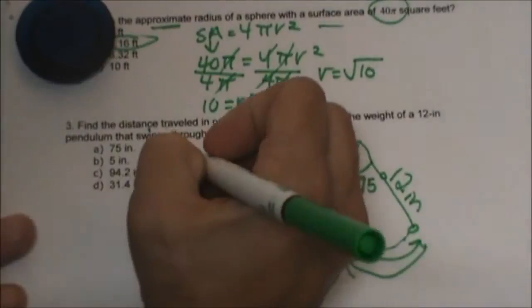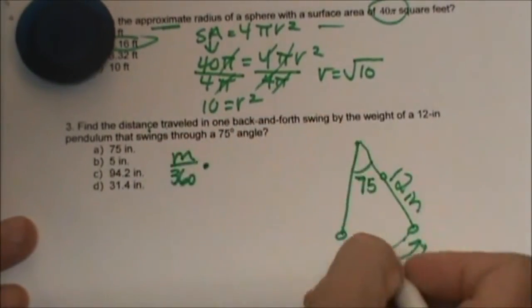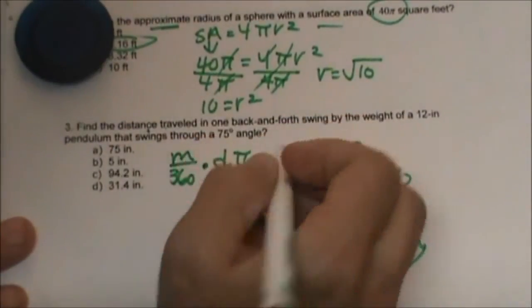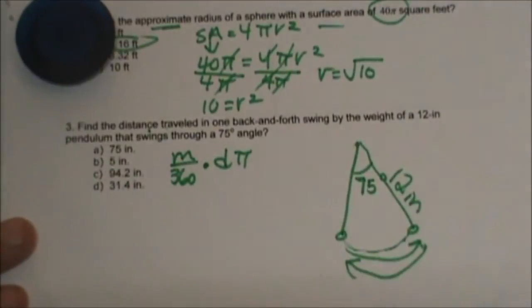Remember the formula, the measure over 360 times, and remember the arc length is part of the circumference, so d times pi. So what is our diameter if our pendulum swing is 12?